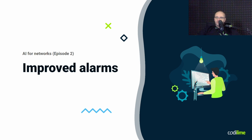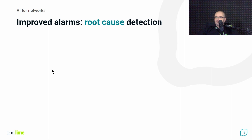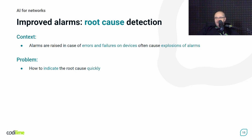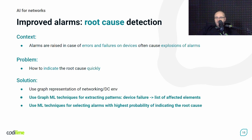Today I would like to focus on improved alarms in terms of root cause detection and filtration of non-meaningful alarms. Alarms arise in case of errors and failures on devices, and very often such an event causes an explosion of alarms on other devices. Usually we are observing such explosions of alarms, and the problem is how to indicate the primary reason — also called the root cause — as fast as possible in order to mitigate the overall problem. Here we could use some machine learning techniques to improve the process.